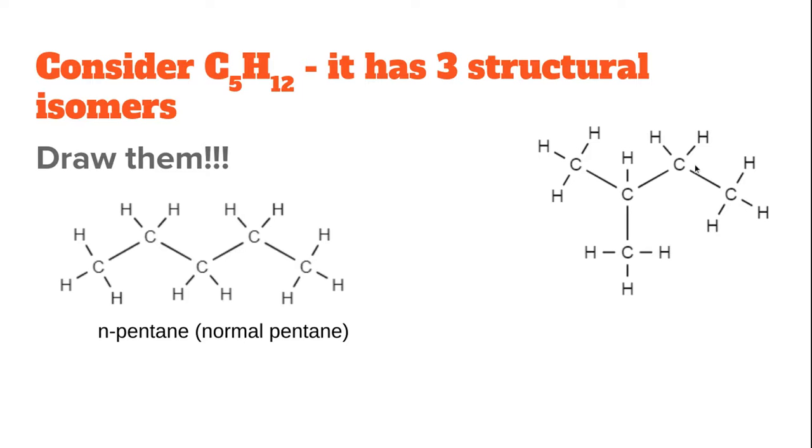If we number this 1, 2, 3, 4, off of carbon 2 there's a methyl group. So this is 2-methylbutane. Now, you can't just take this carbon and attach it to this carbon over here and say that's another structural isomer, because we always want to number with the lowest possible combination. So we just number this 1, 2, 3, 4, and this would still be 2-methylbutane.